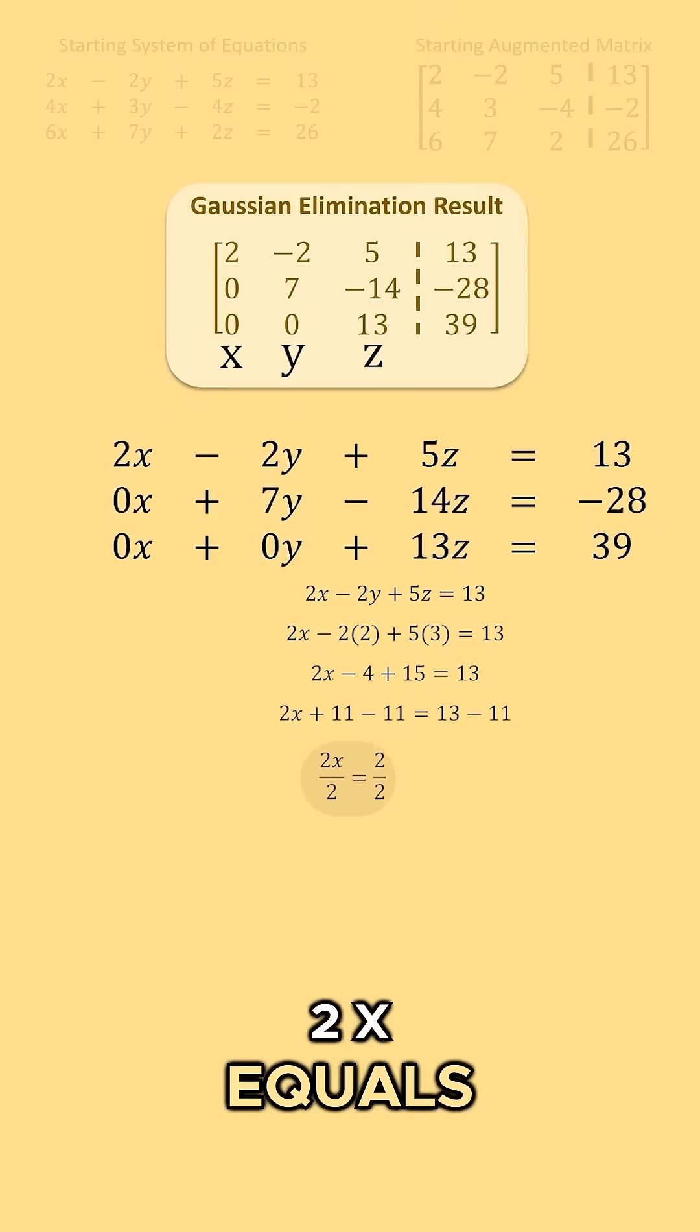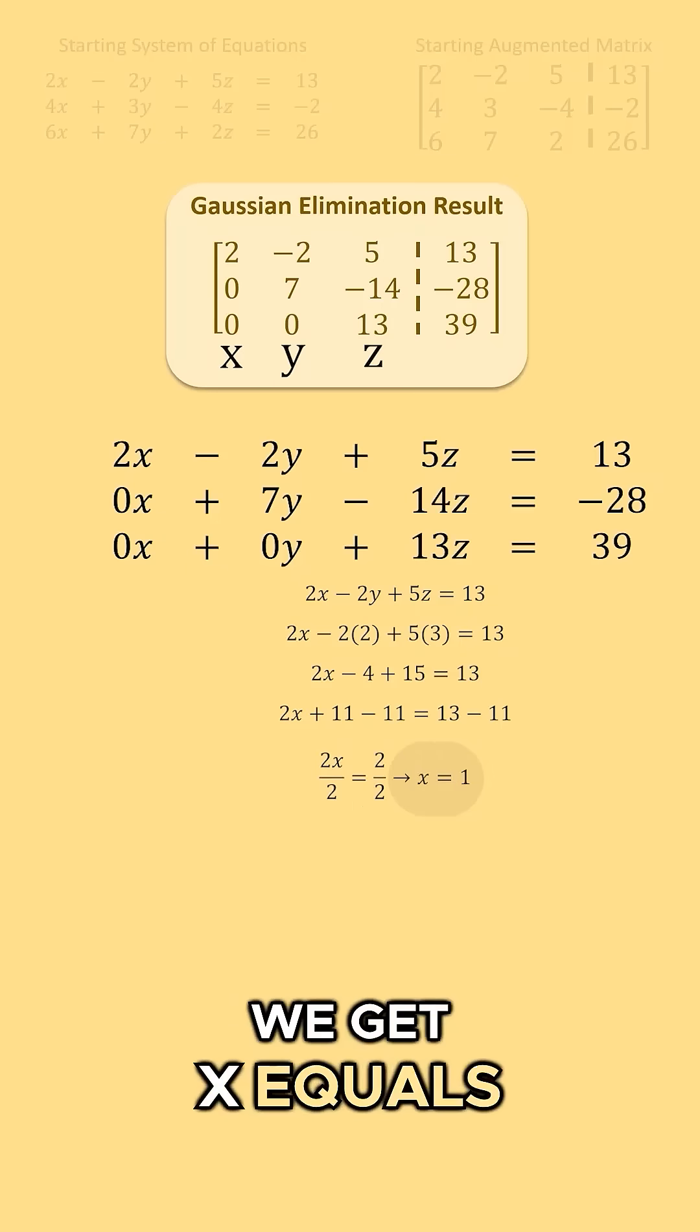Subtracting 11 on both sides, we get 2x equals 2. Dividing by 2, we get x equals 1.